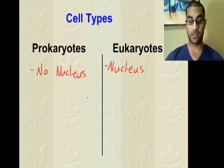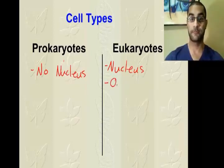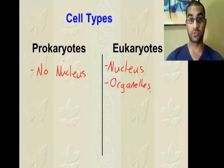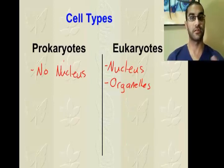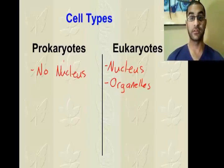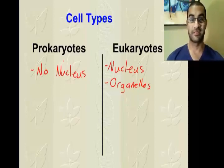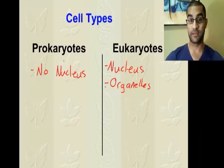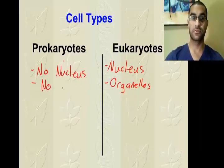Besides the nucleus, there are three other characteristics. One is the presence of organelles, which is also found in eukaryotic cells. Organelles are small components within a cell that each perform a specific task — things like mitochondria, chloroplasts, endoplasmic reticulum, Golgi apparatus. Those are called organelles, and they're only found in eukaryotic cells. Prokaryotic cells do not have these fairly advanced structures.